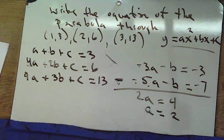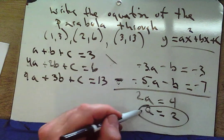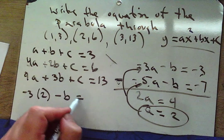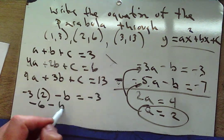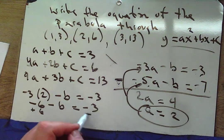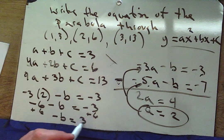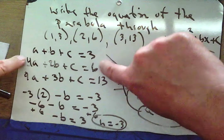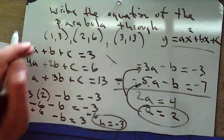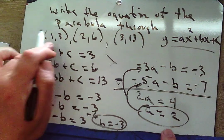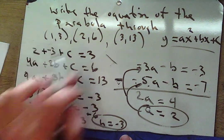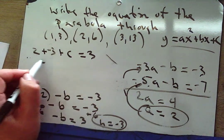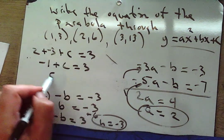So 2a equals 4, meaning a equals 2. Plugging a into our two-variable equation: negative 3 times 2 minus b equals negative 3, so negative 6 minus b equals negative 3, giving b equals negative 3. Then plugging a=2 and b=-3 into the first equation: 2 minus 3 plus c equals 3, so negative 1 plus c equals 3, and c equals 4.